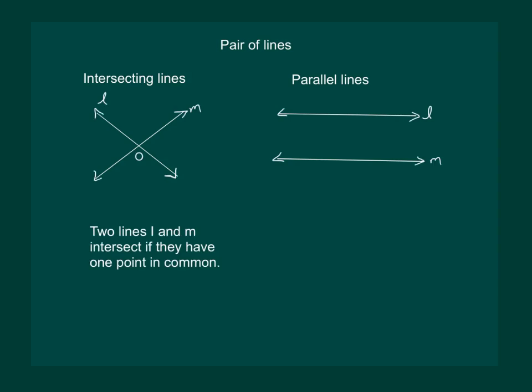Two lines L and M intersect if they have one point in common. On the same lines we can say that two lines L and M are parallel if they do not have any common point.